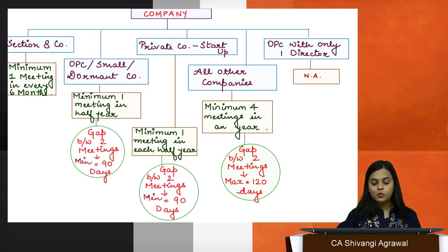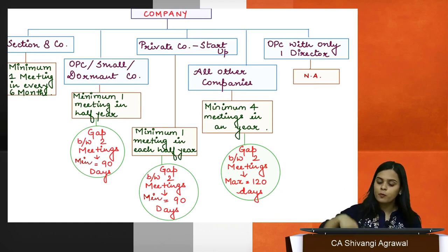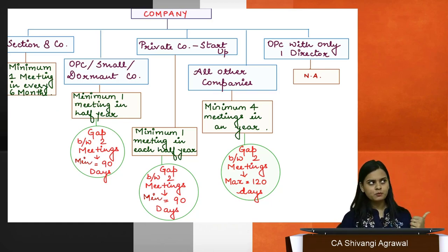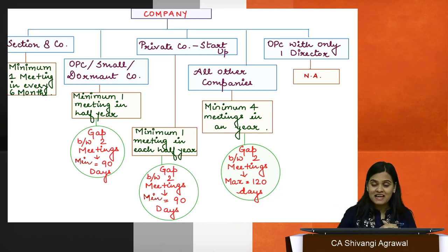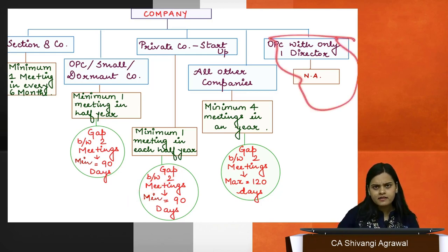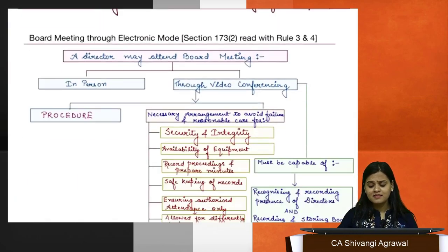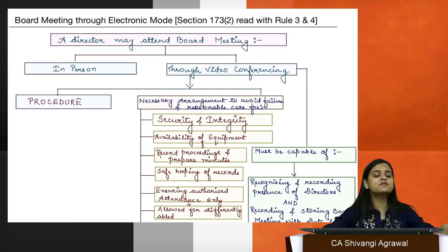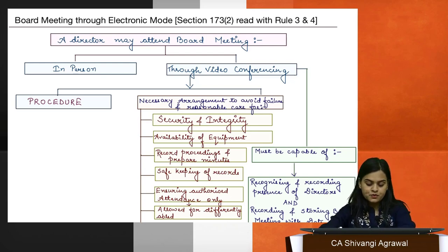There are exemptions. Section 8 companies require a minimum of one meeting in every six months. OPC, small, or dormant companies require one meeting per half year with a minimum gap of 90 days. Private companies that are startups follow the same rule as OPC, small, and dormant companies. For a OPC with only one director, the section does not apply at all — you cannot call a board meeting and meet with yourself.